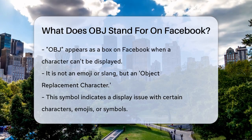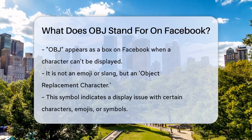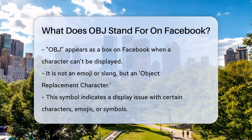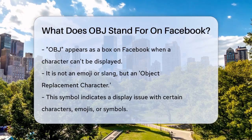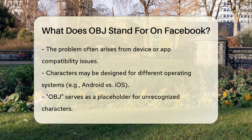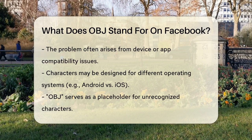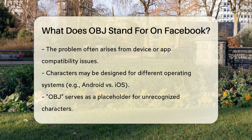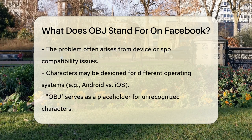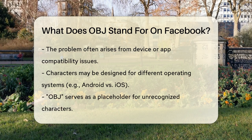It appears when Facebook can't display a particular character, emoji, or symbol correctly. This usually happens because your device, system, or the version of the Facebook app you're using doesn't support the character that's been used in the post. For instance, if someone sends you a message or posts something with an emoji that your device can't recognize, you'll see this OBJ box instead.